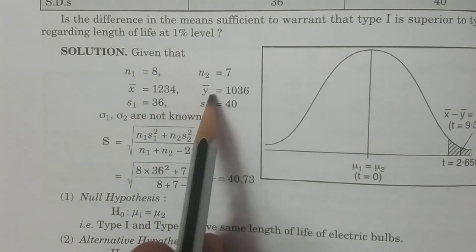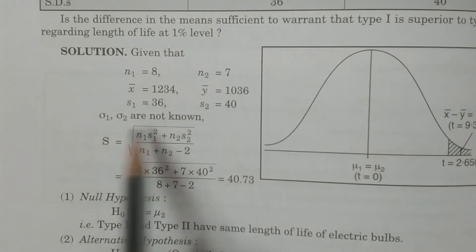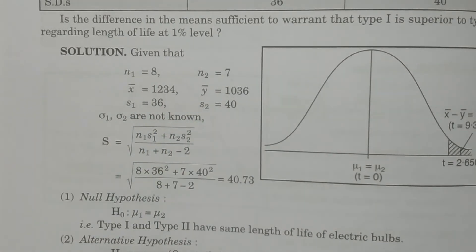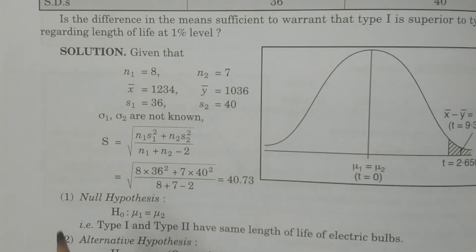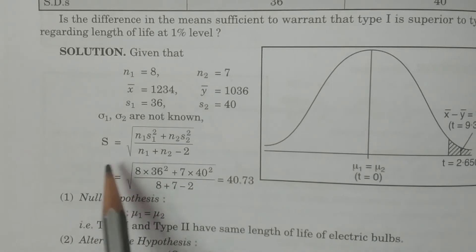And n1, n2, x̄, ȳ, s1, s2 are given here. Sigma 1, sigma 2 are not known. The two population standard deviations, σ1, σ2 are not known. Then in such a case, we have to calculate capital S.